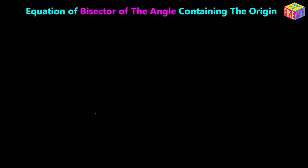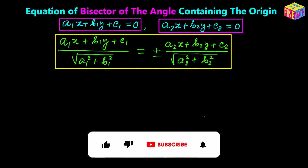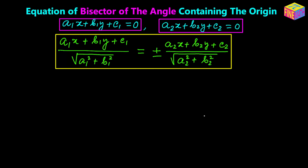So far we have learned that the equation of the angle bisectors are like this. When the equations of the original straight lines are a1·x + b1·y + c1 = 0 and a2·x + b2·y + c2 = 0, then the equation of the angle bisectors are what I have in the yellow box here. That's (a1·x + b1·y + c1) / √(a1² + b1²) = ± (a2·x + b2·y + c2) / √(a2² + b2²). We actually have two equations — one with the plus sign and one with the minus sign on the right-hand side.